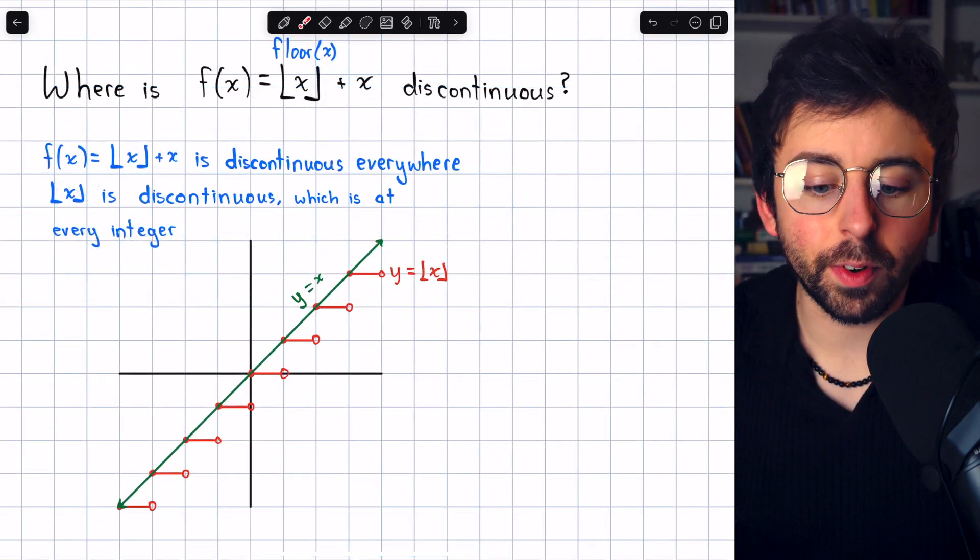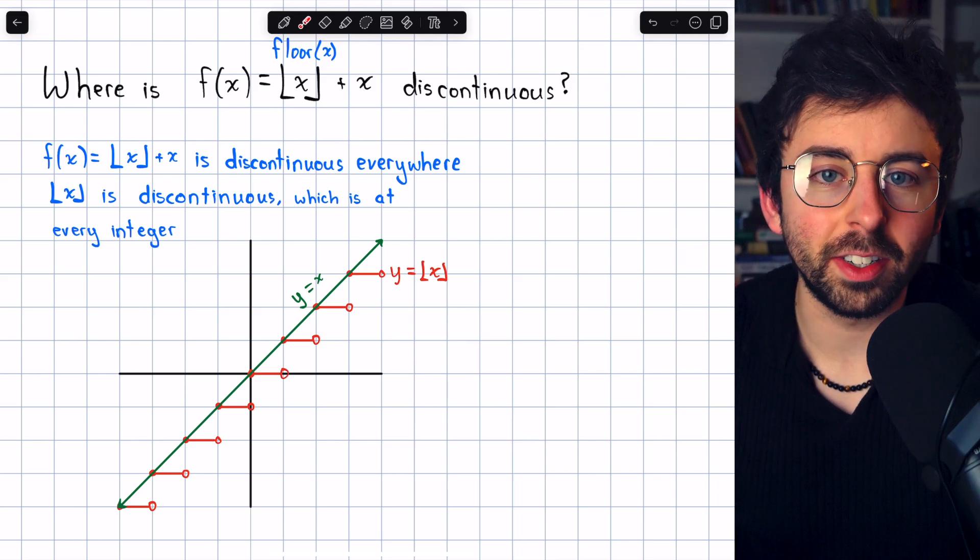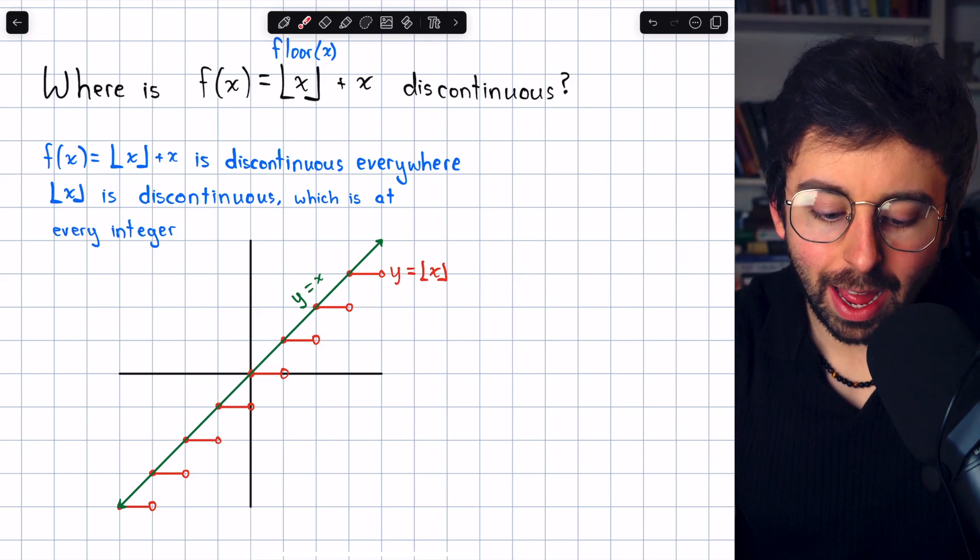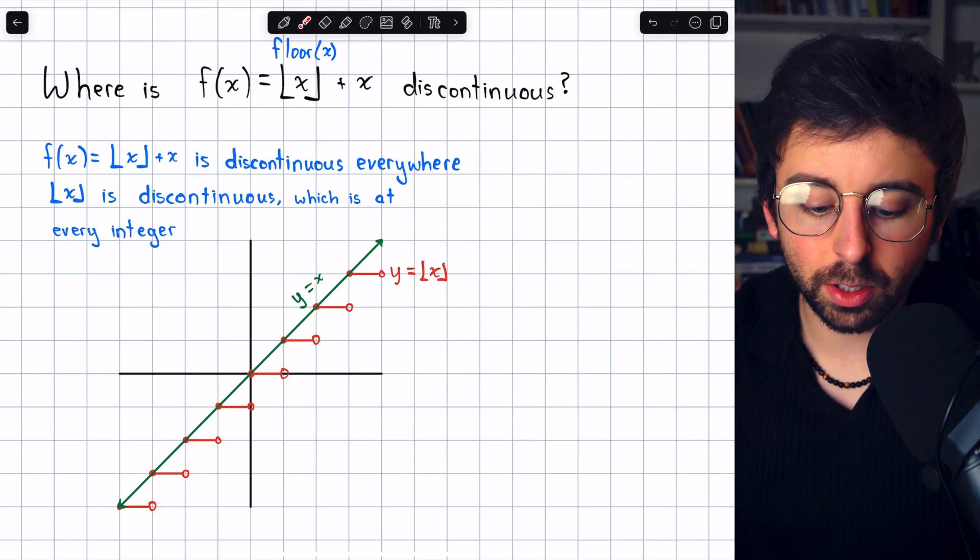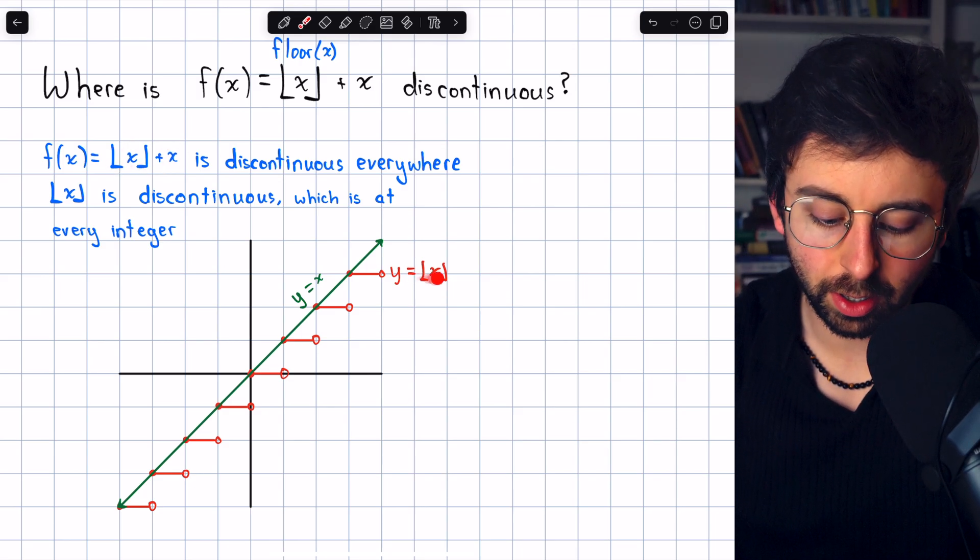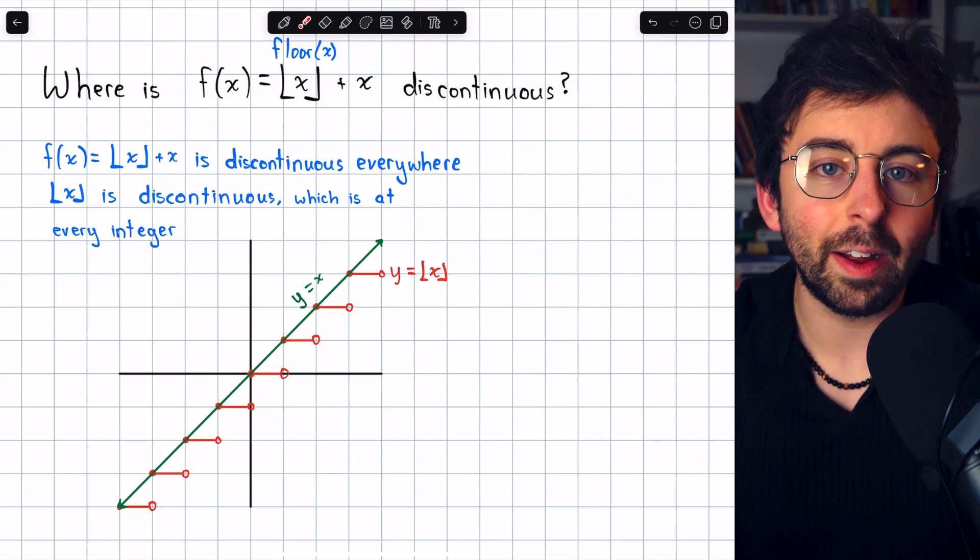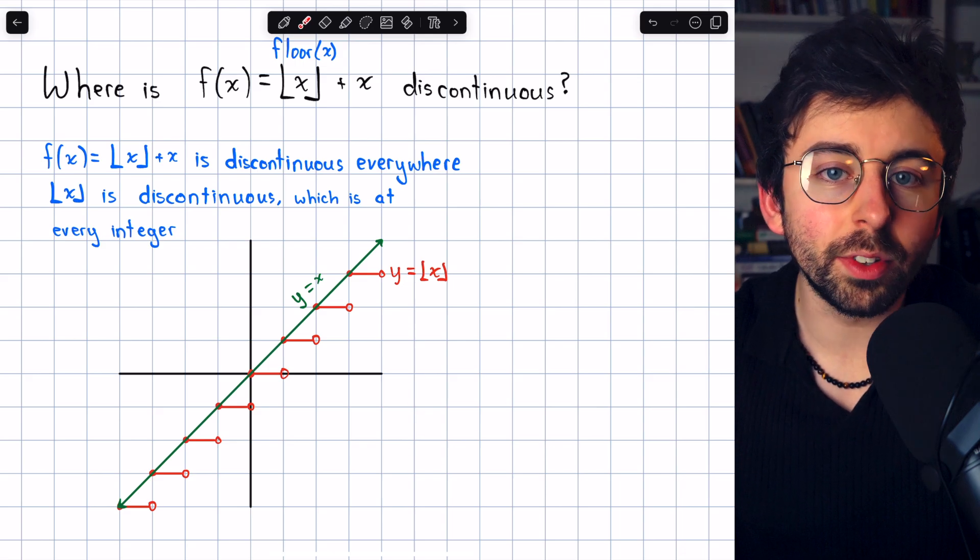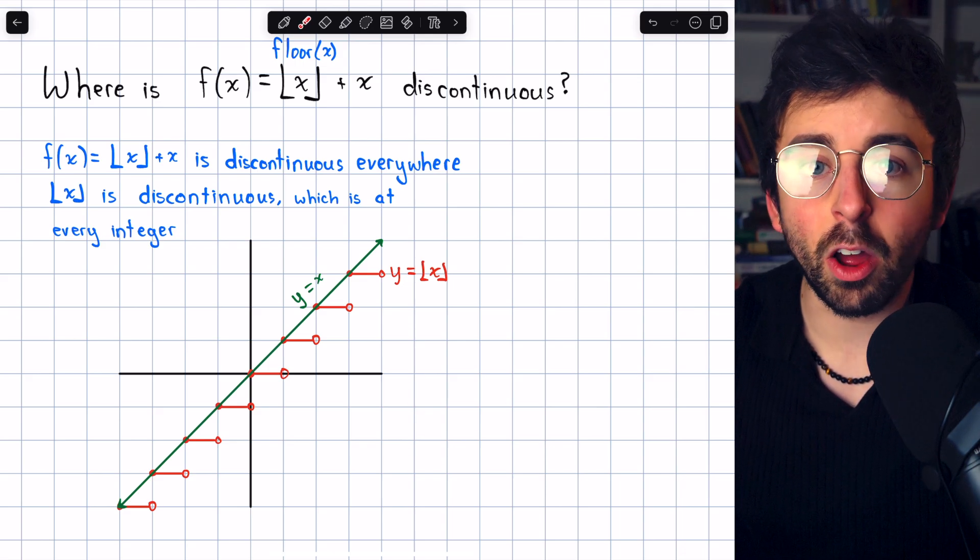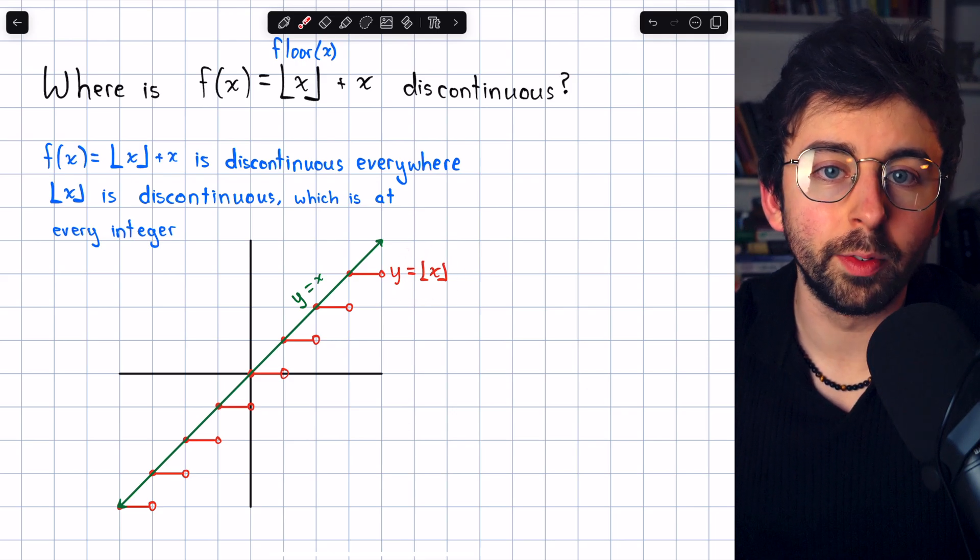Considering the graph of the function f(x) is also a useful way to learn about its discontinuities. Before we graph f(x), it may be helpful to graph its component functions: the floor function, which I've graphed in red, and the linear function y equals x, which I have graphed in green. Now y equals x shouldn't be surprising, and hopefully this isn't the first time you've seen a graph of the floor function.